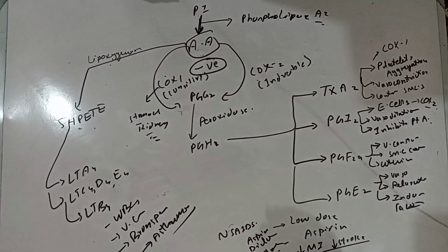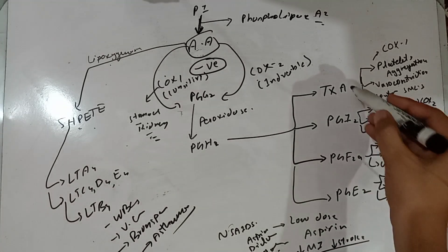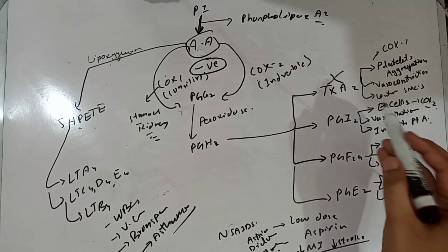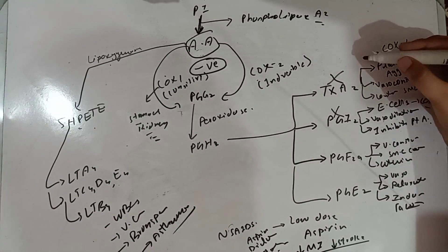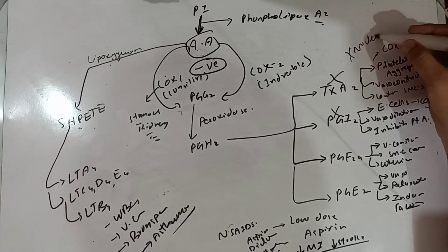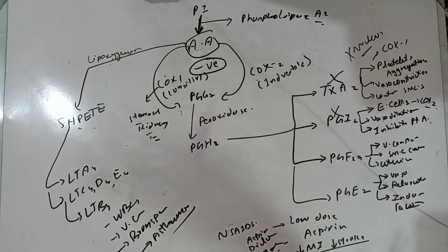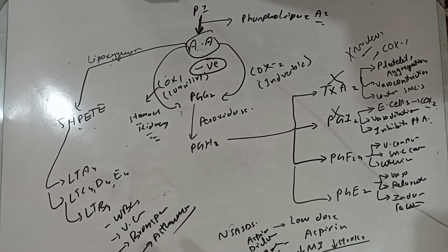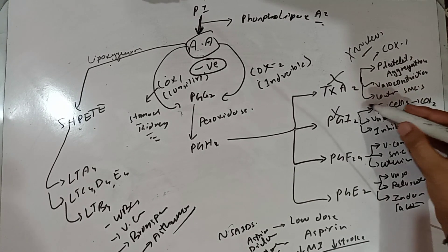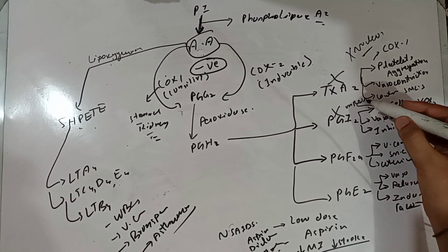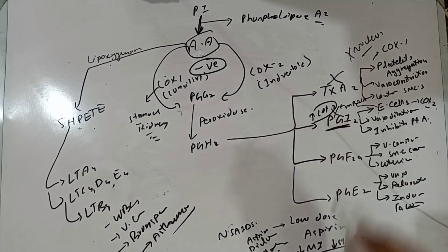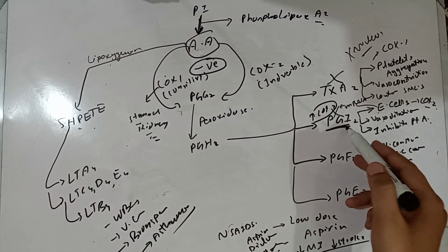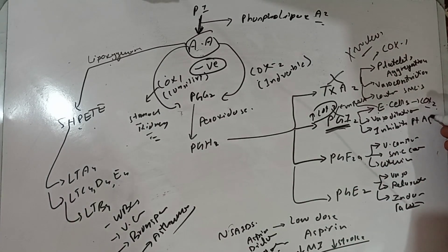When we give aspirin, it inhibits the synthesis of thromboxane A2 in platelets and inhibits synthesis of PGI2 in the endothelial cell. However, platelets don't have a nucleus, so they remain inhibited — platelet aggregation remains inhibited. Endothelial cells have a nucleus, so they synthesize new mRNA and upregulate COX-2, so prostaglandin PGI2 synthesis in the endothelial cell continues, and its inhibitory role on platelet aggregation continues.